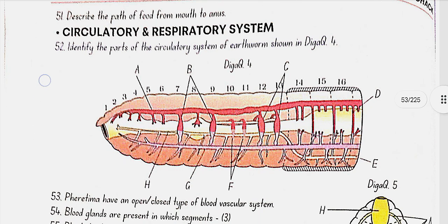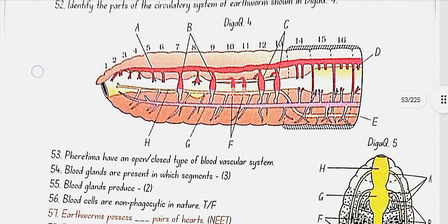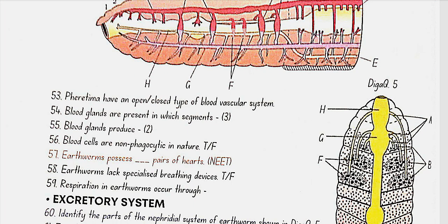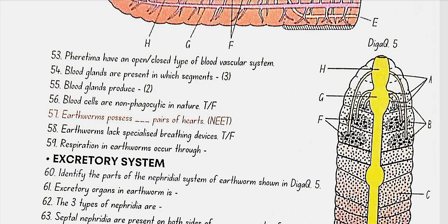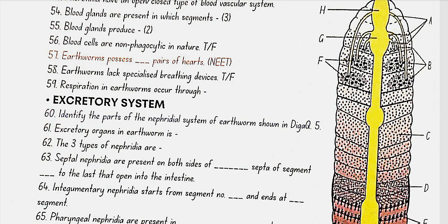Circulatory and respiratory system. Identify the parts of the circulatory system shown in diagram 4. A is the dorsal vessel, B is the lateral hearts, C is lateral esophageal hearts, D is commissural vessel, E is subneural vessel, F is anterior loops, G is ventral vessel, H is lateral esophageal vessel. Pheretima has a closed type of blood vascular system. Blood glands are present in the 4th, 5th and 6th segments and produce blood cells and hemoglobin. Blood cells are phagocytic in nature. Earthworm possesses 4 pairs of hearts. Earthworm lacks specialized breathing devices — true. Respiration occurs through the moist body surface.